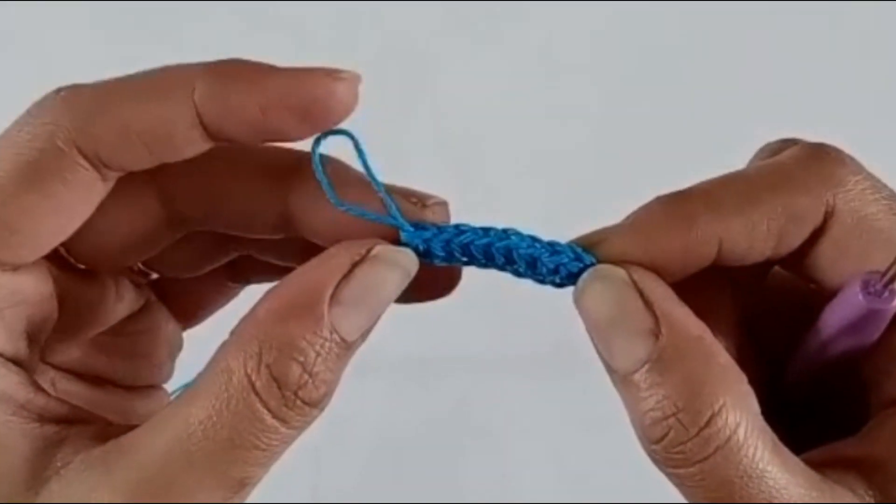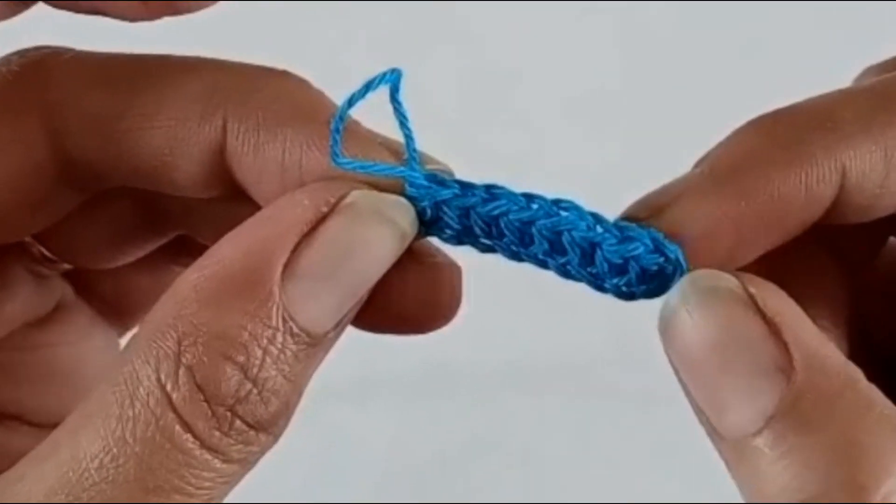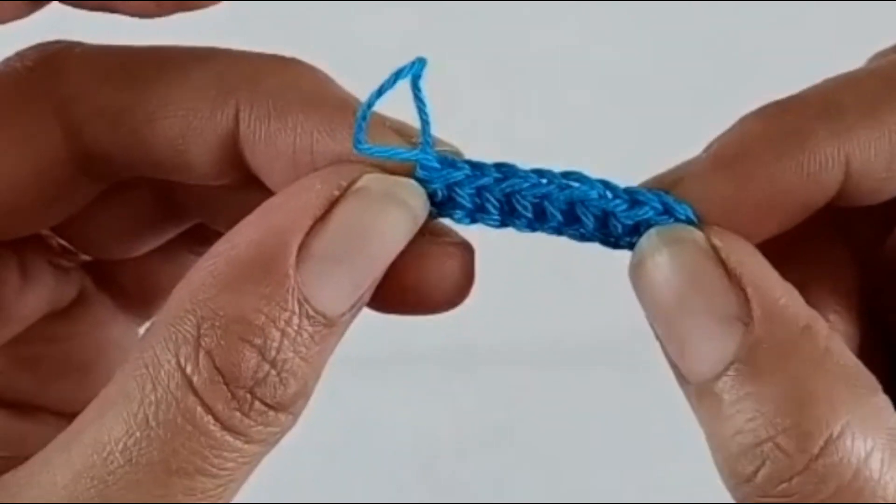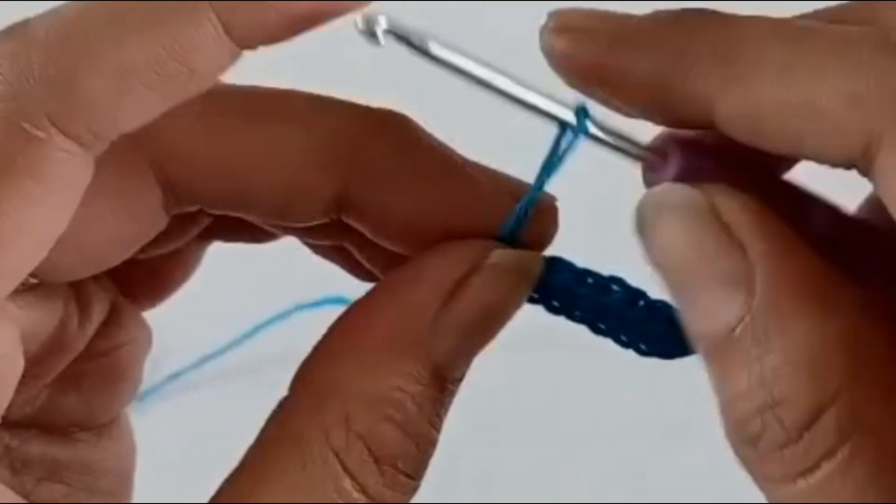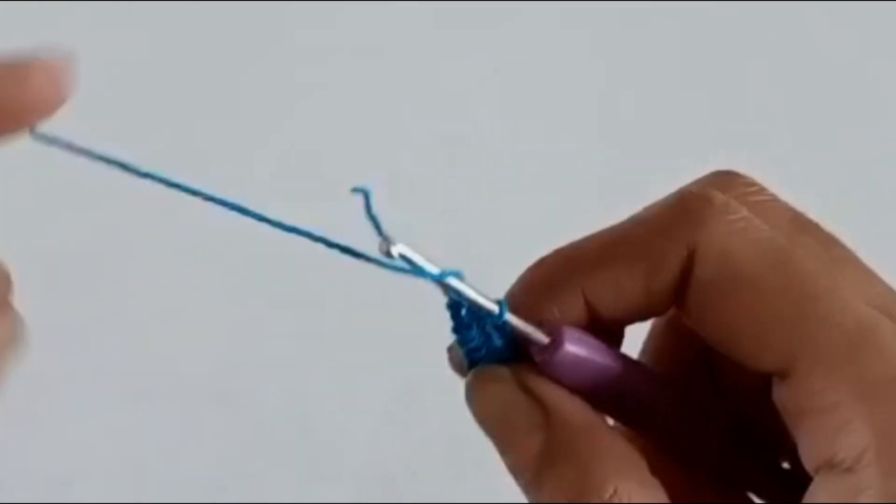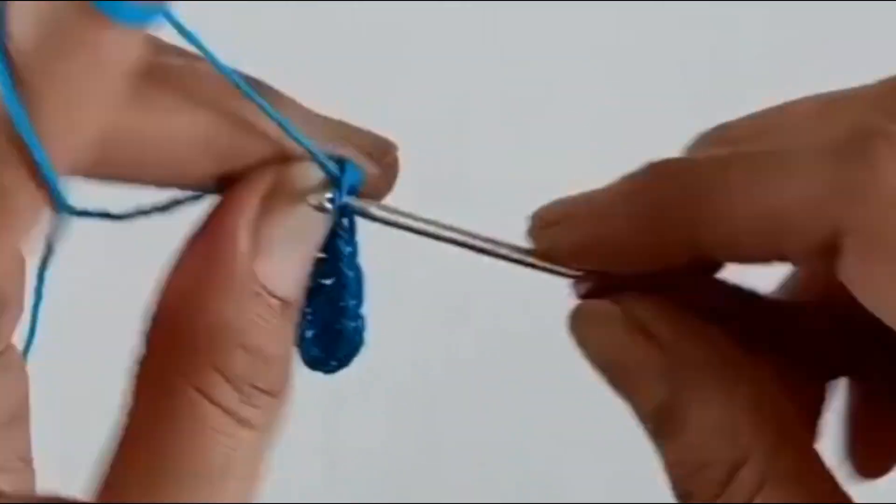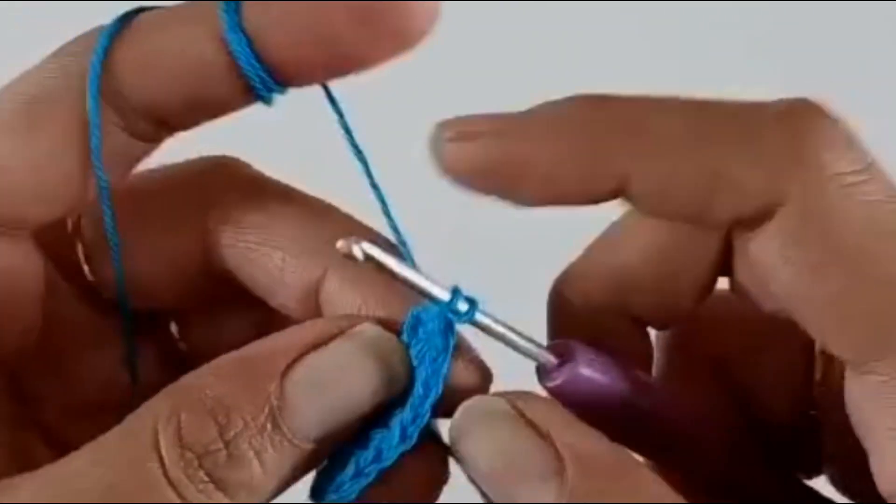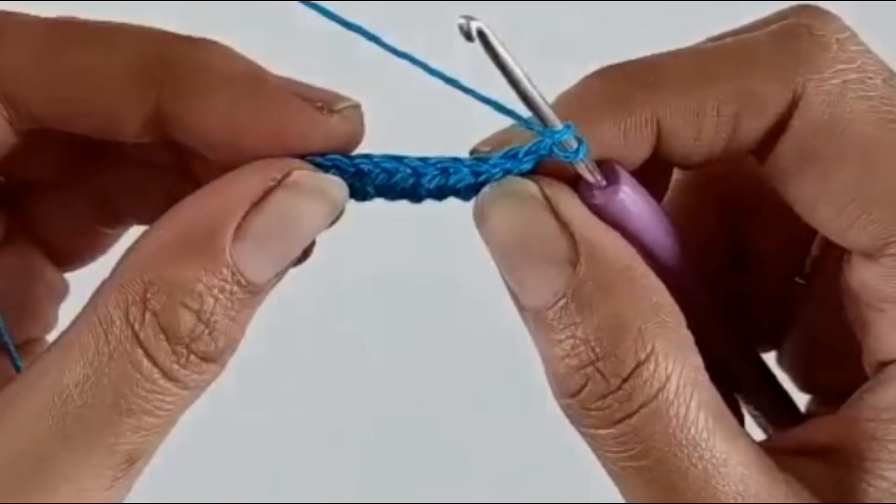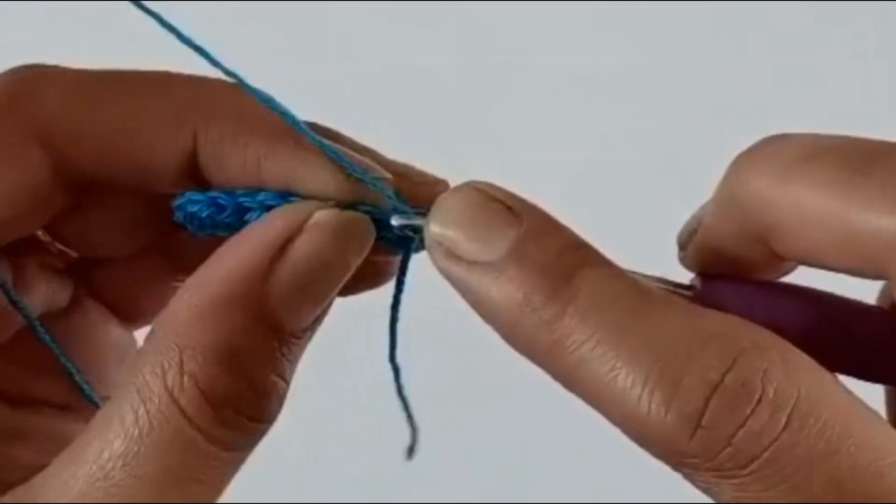So in total I have worked eight half double crochets, and the turning chain, that is the two chains, will not be considered as a half double crochet. So for the second round, work two chains and turn your work, and going into each of the stitches work a half double crochet.